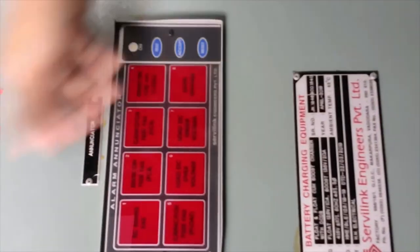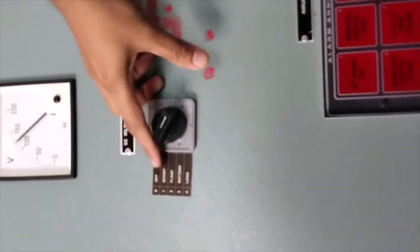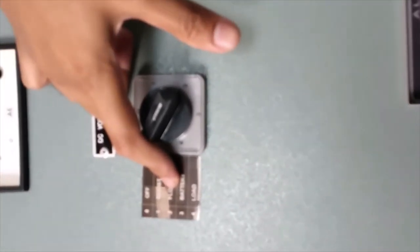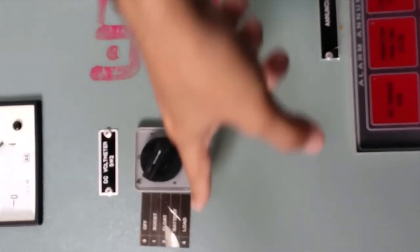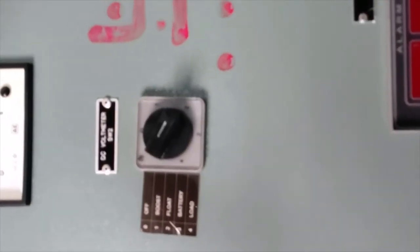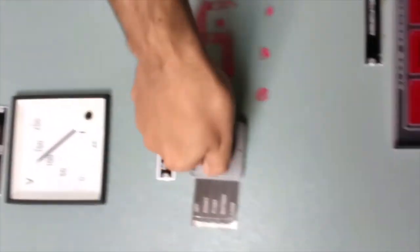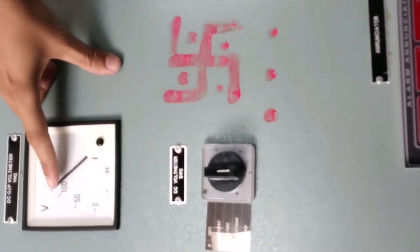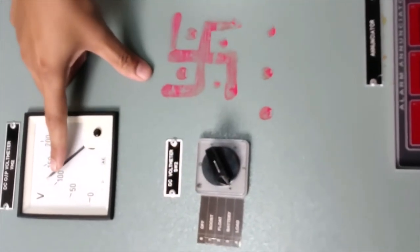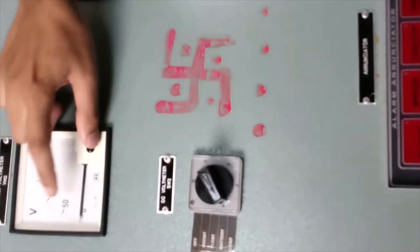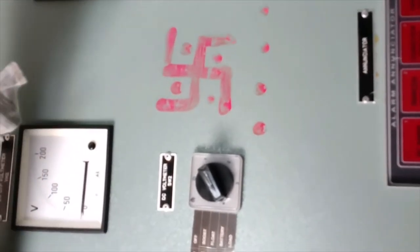Now we can select the switch - boost, float, and load. Float voltage is 120V, battery voltage is 120V, load voltage is 120V. Now you have to add boost voltage.